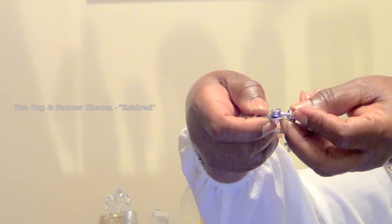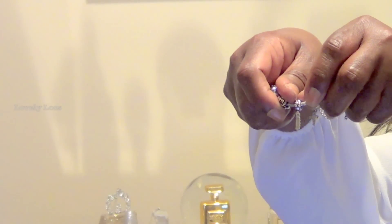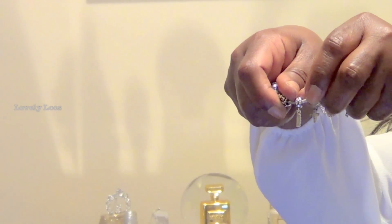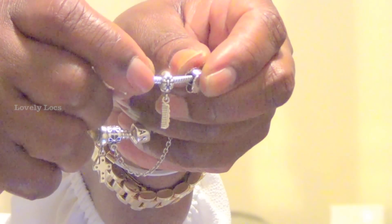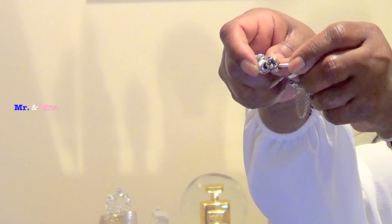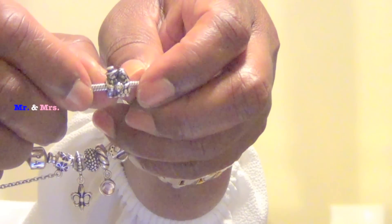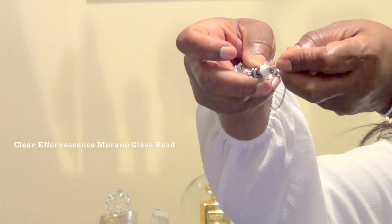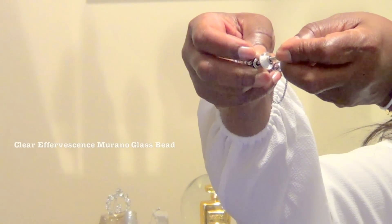This is the teacup and saucer charm. This is a hair comb charm. And it's called lovely locks. This is Mr. and Mrs. This is the clear effervescence glass murano bead.